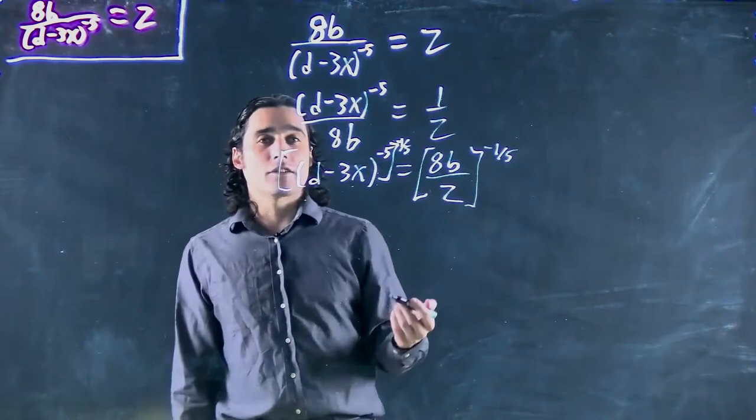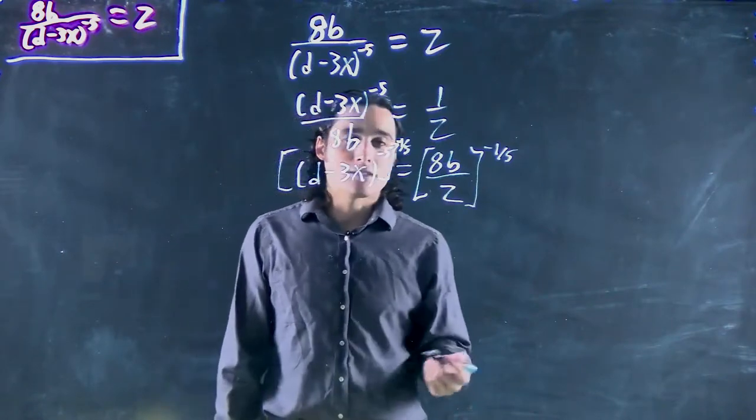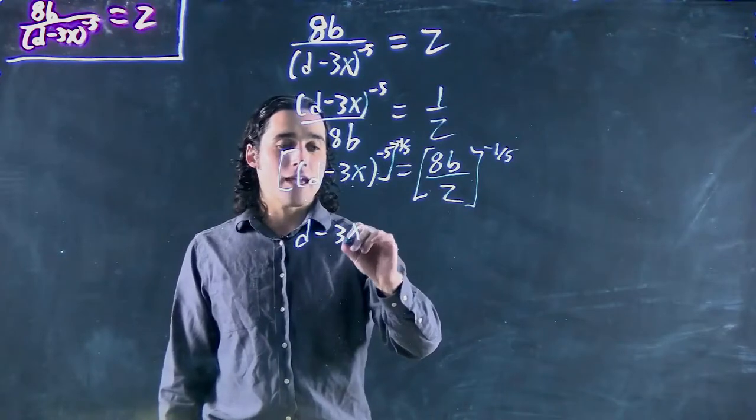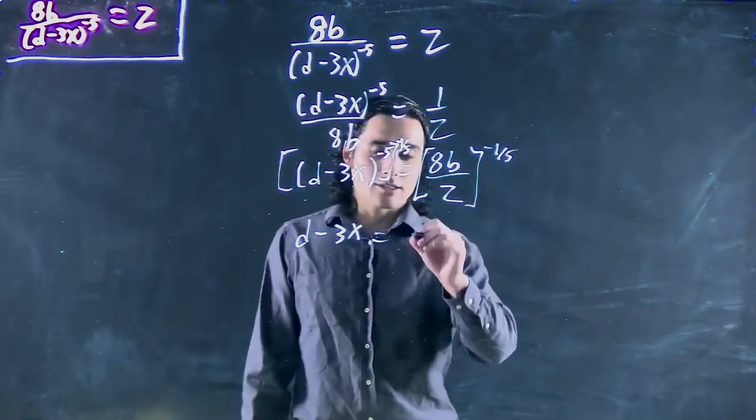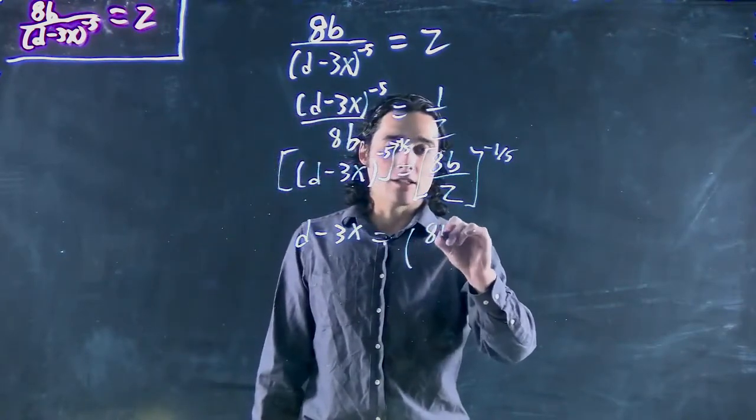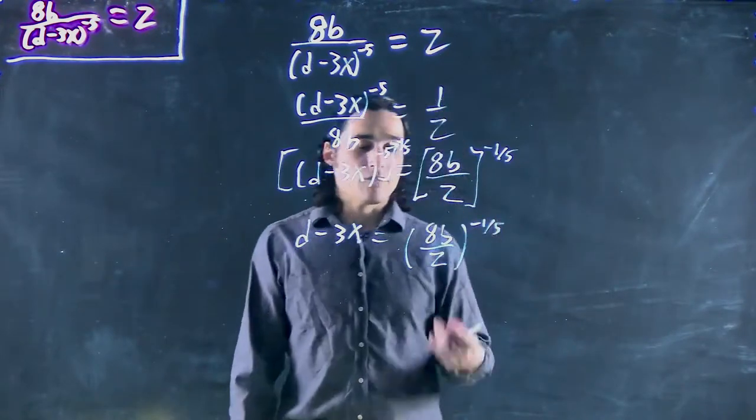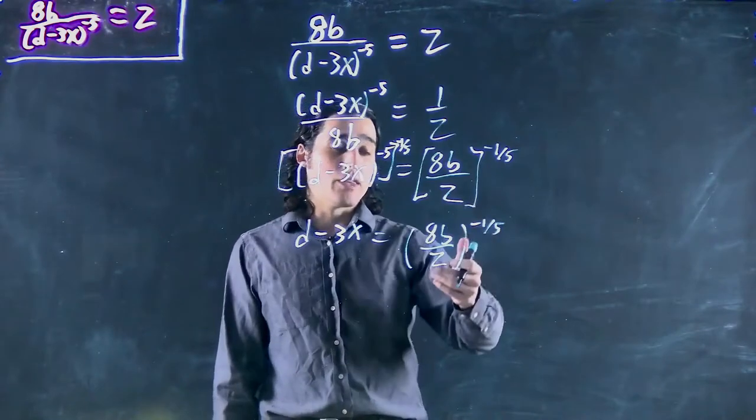Now since these are variables, we're not going to be able to actually evaluate this. But this will cancel out to get d - 3x equals this mess over here: 8b divided by z to the minus 1/5. And in fact, if we wanted to, we could flip this.